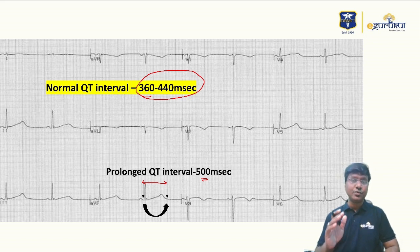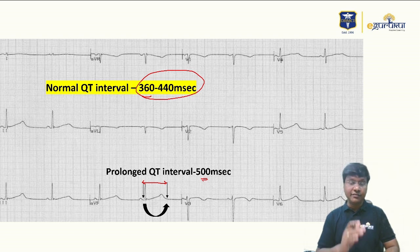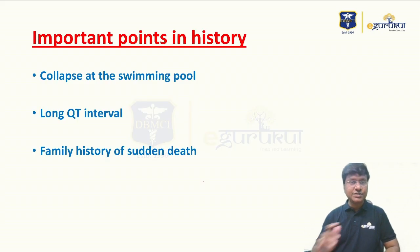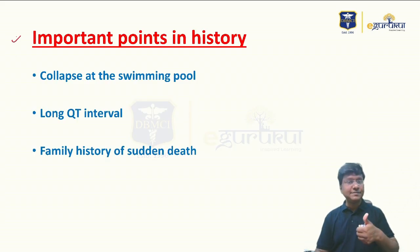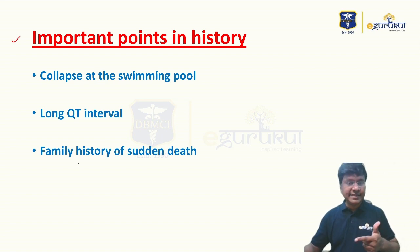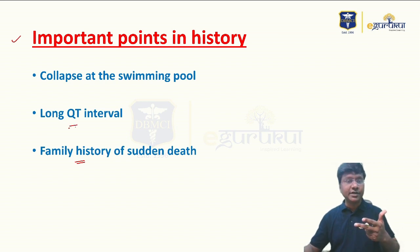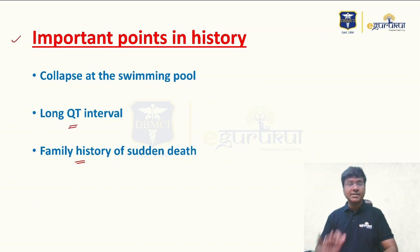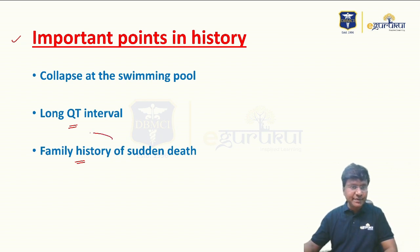A long QT interval can progress to polymorphic ventricular tachycardia, which may cause collapse. The important points in this patient's history are: collapse at the swimming pool, family history of sudden death, and the long QT interval on ECG. The family history of sudden death indicates a congenital disorder causing long QT.